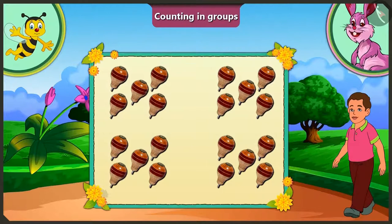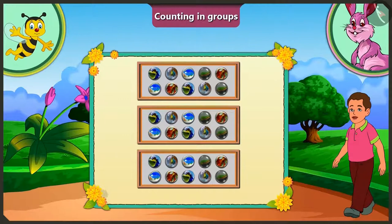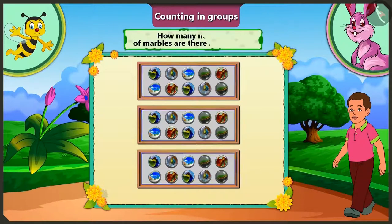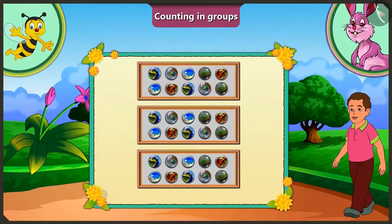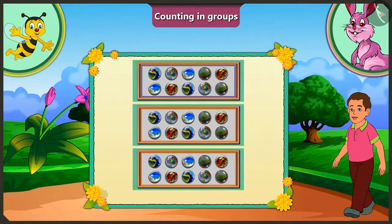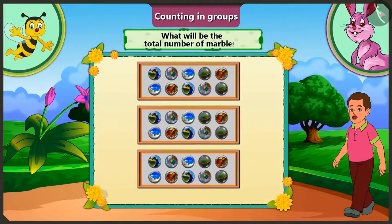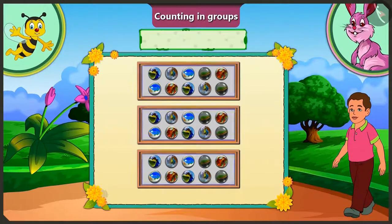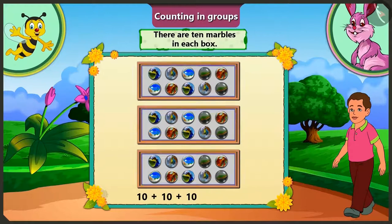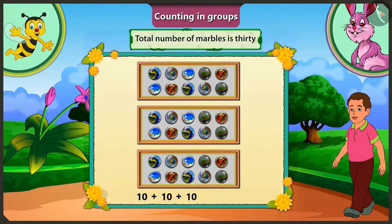Yes, I have understood it very well. Come on honey, now you tell me how many marbles are there in each box? There are 5 and 5 — 10 marbles in each box. Now try to guess, how many marbles are there in total? Each box has 10 marbles, and if there are 3 such boxes, the total number of marbles is 30.